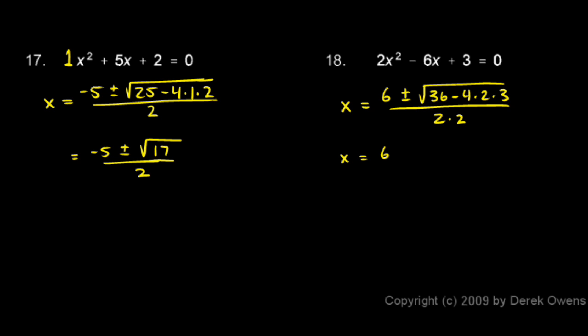So that equals 6 plus or minus, and we have 36 minus, what do we have under the radical here? 4 times 2 is 8, times 3 is 24.